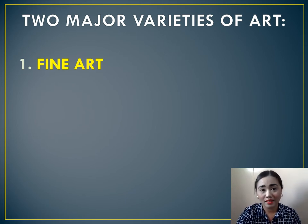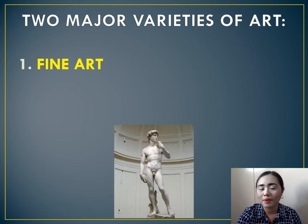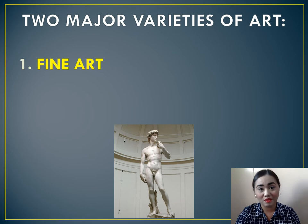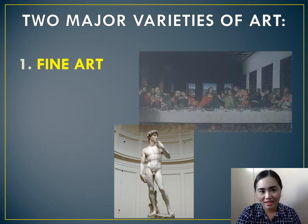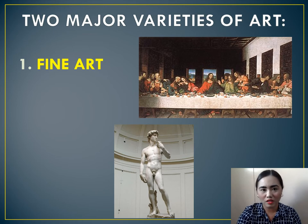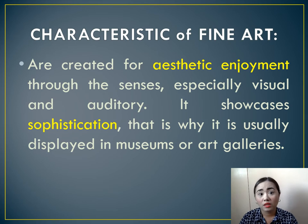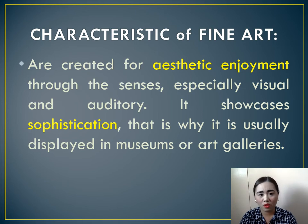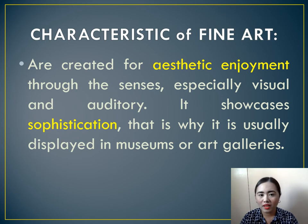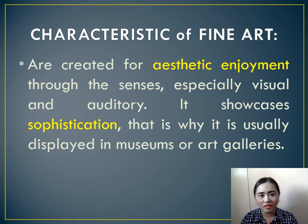There are two major varieties of art. The first one is fine art. Examples of fine art pieces include David by Michelangelo and The Last Supper by Leonardo da Vinci. Fine art pieces are created for aesthetic enjoyment through the senses — specifically visual and auditory. It showcases sophistication, which is why most fine art pieces are displayed in museums or sold at art gatherings.